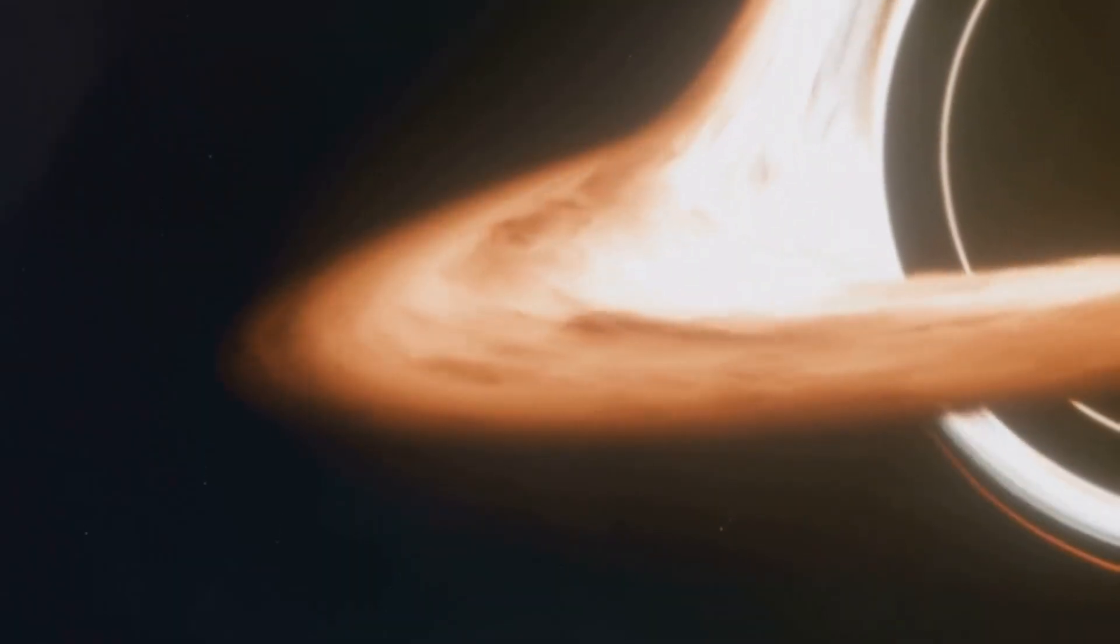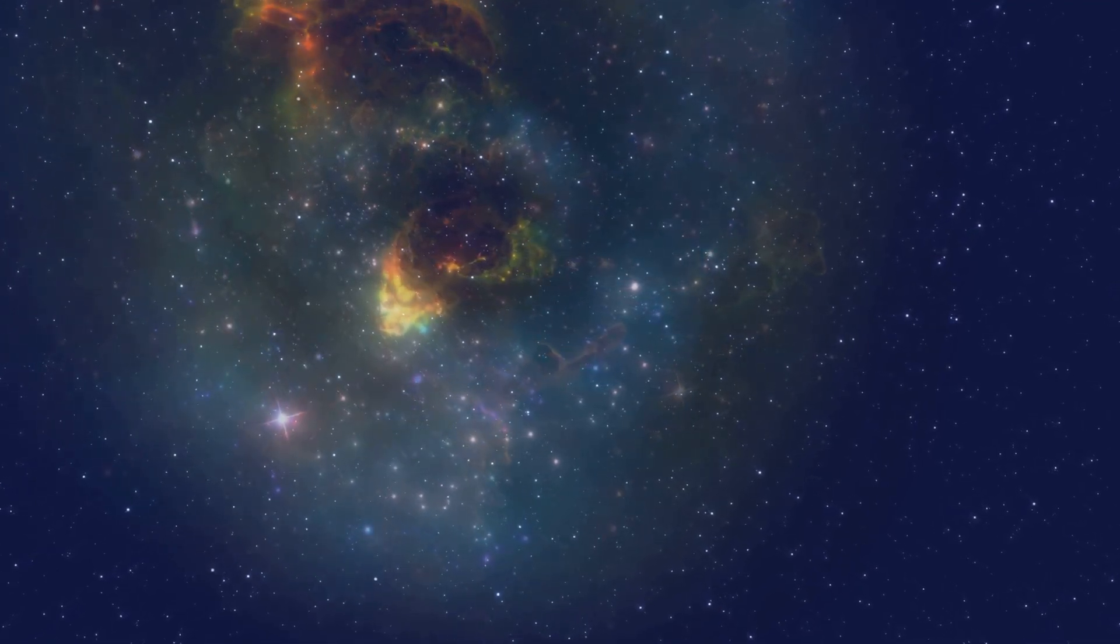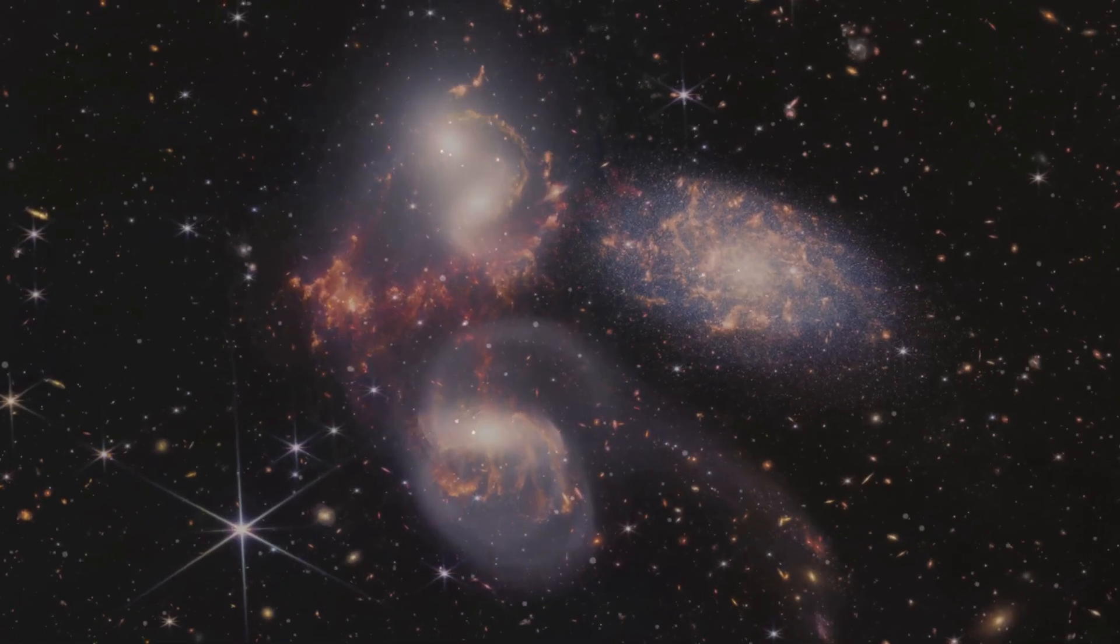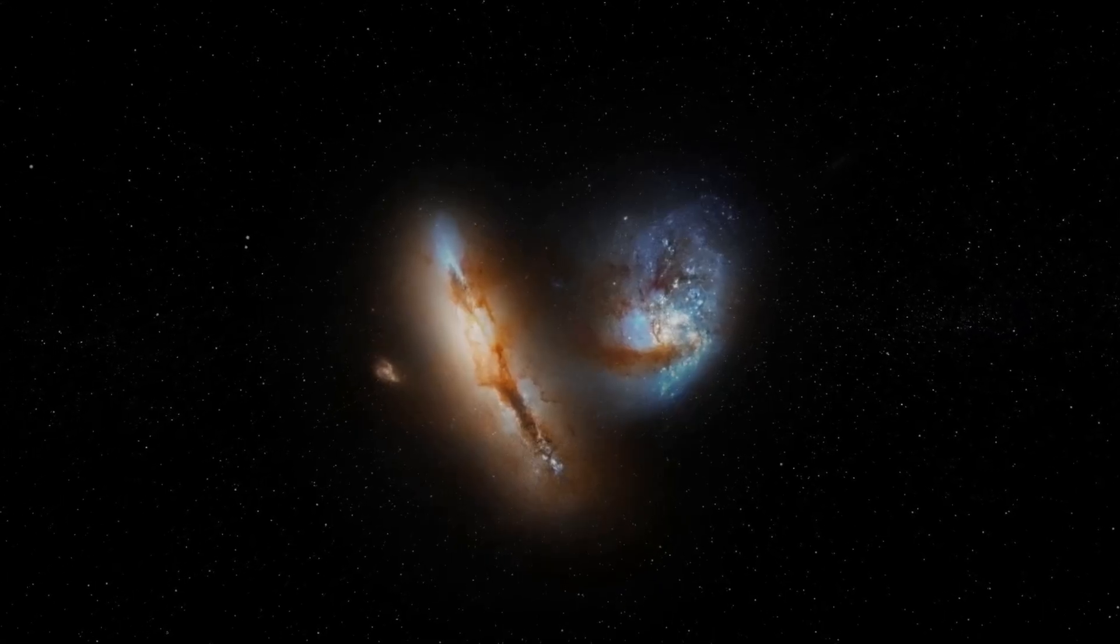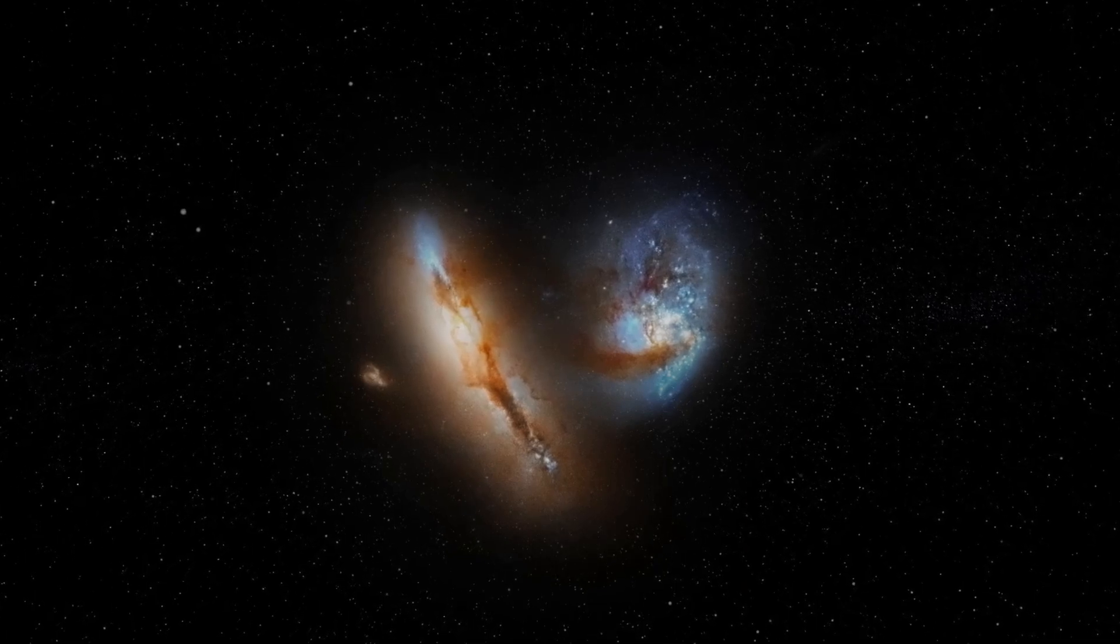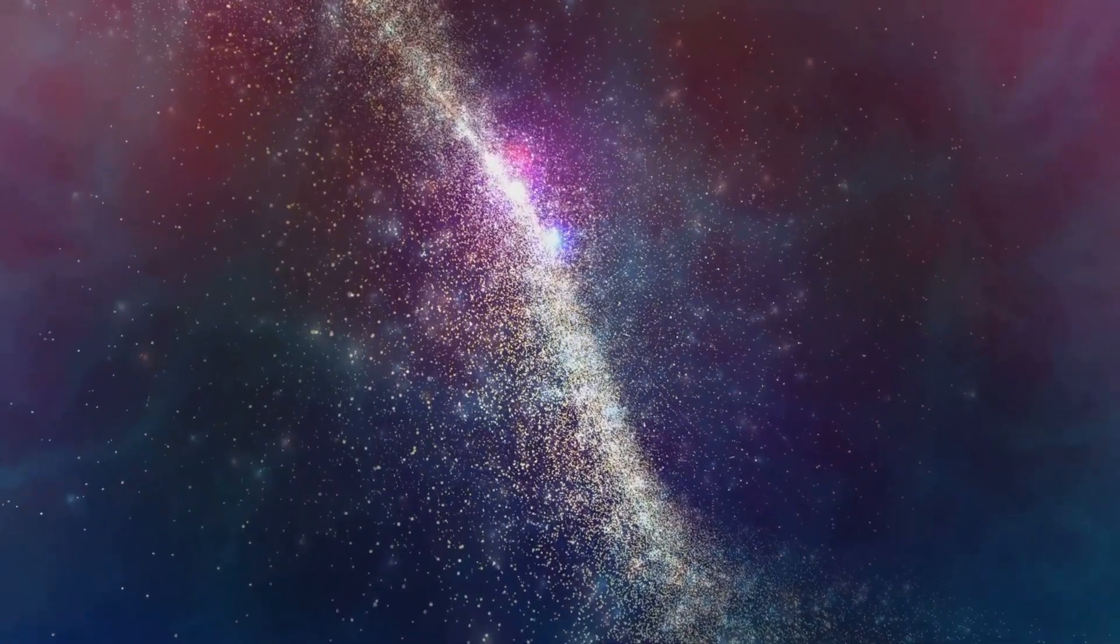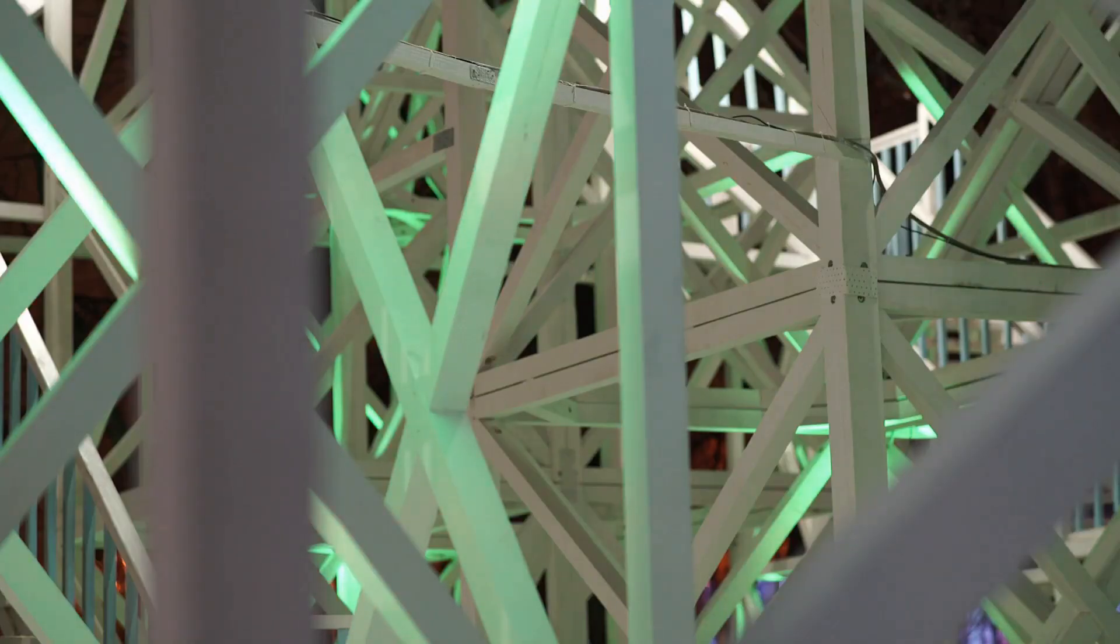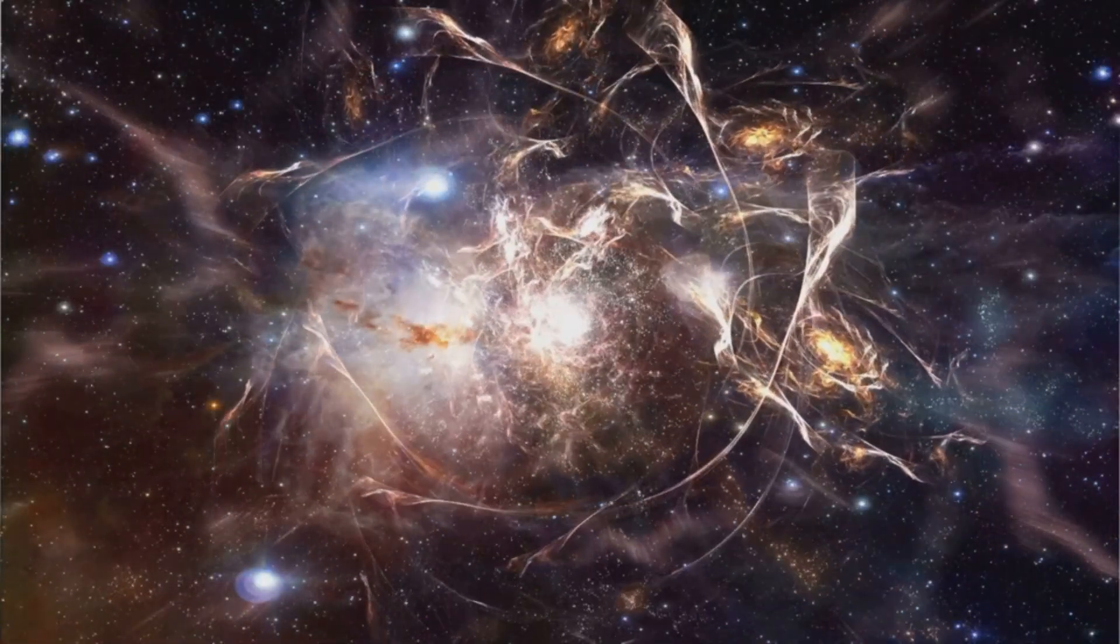This gravitational influence is not subtle. It is the architect of the cosmos as we know it. Without dark matter, galaxies would fly apart. The beautiful spiral arms of the Milky Way would have long ago unraveled and flung their stars into the empty void of intergalactic space. Clusters of galaxies, those magnificent celestial cities, would never have formed in the first place. Dark matter provides the unseen scaffolding, the gravitational glue that allowed the universe to clump together and form the large-scale structures we observe today.